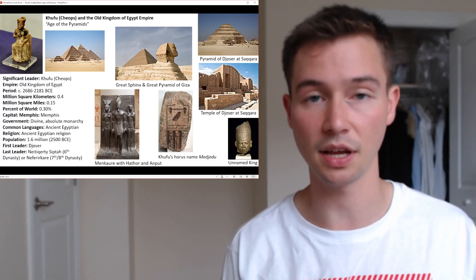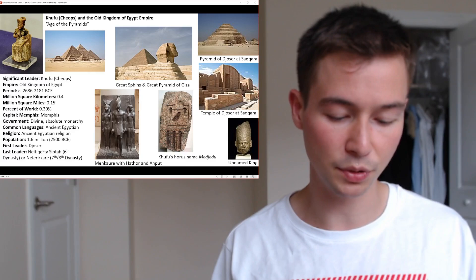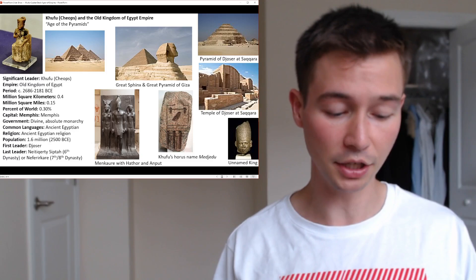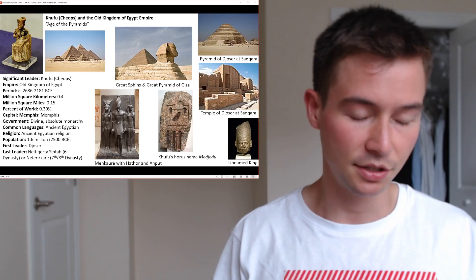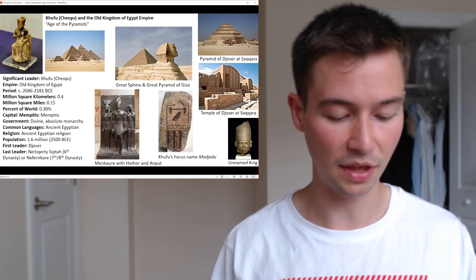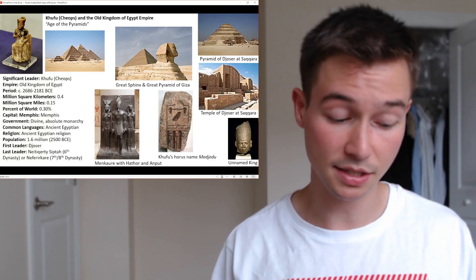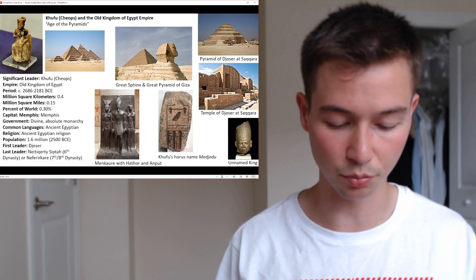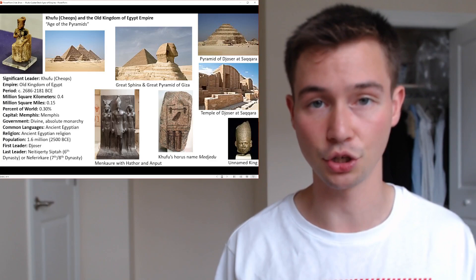The legacy of Khufu transcended his own era, influencing the religious and architectural practices of subsequent dynasties. His architectural innovations became a template for later pyramid constructions, albeit none as large as his. In conclusion, Khufu — the visionary pharaoh of the Old Kingdom — left an indelible mark on ancient Egyptian history. His reign was marked by grandeur, ambition, and dedication to honouring the divine. Through the enduring legacy of the Great Pyramid and other architectural marvels, Khufu's contributions continue to be celebrated.